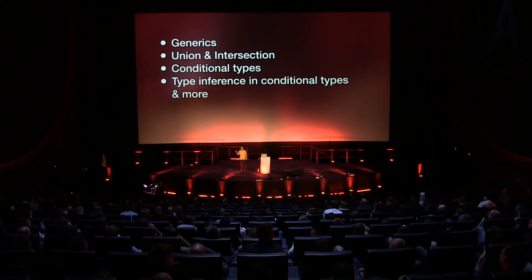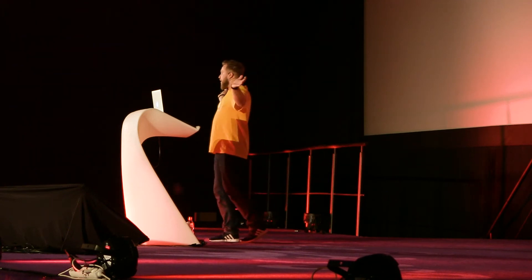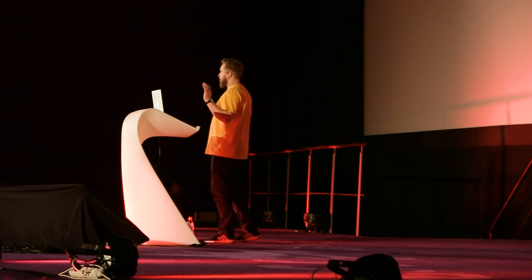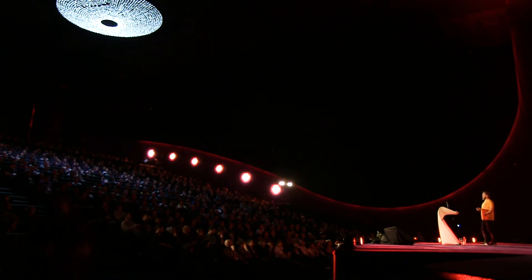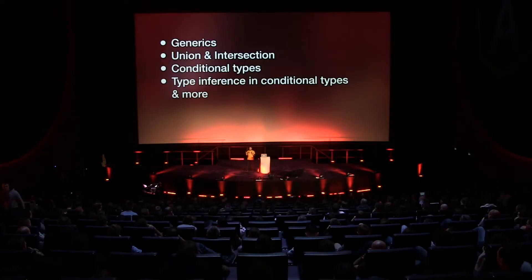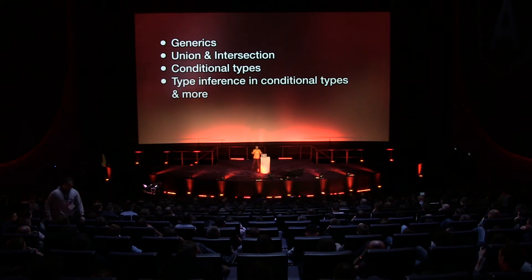But why do we need these features to begin with? JavaScript is a very dynamic language — you can do a lot of things with it. However, to make it stricter, you want to limit the developers who use your libraries, services, and projects to be more predictable. You want to limit the scope of what they can do and guide them into specific usages.